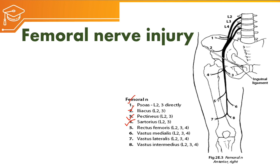It travels medial to the femur bone, and at the midpoint of the shaft of the femur it gives branches to the rectus femoris and vastus medialis. Further down, near the knee joint, it gives branches to the vastus lateralis and vastus intermedius.